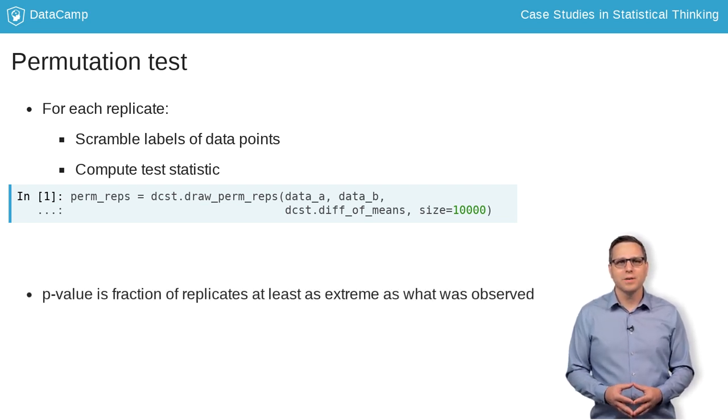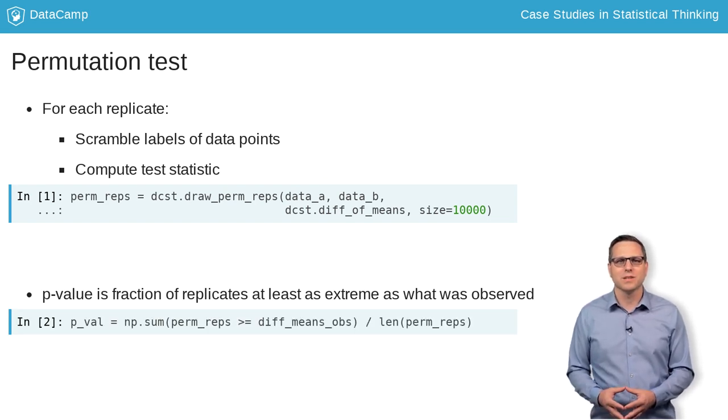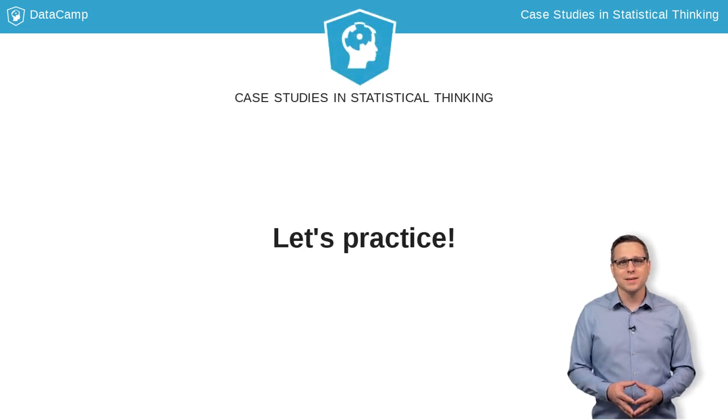The last argument says how many replicates to generate. Finally, the p-value is computed as the fraction of replicates at least as extreme as what was observed. Now you can go ahead and practice these techniques with zebrafish active bouts.